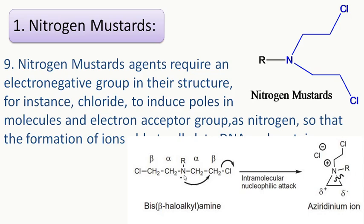You can see: chloro leaves as a leaving group, the adjacent carbon gains a positive charge, the lone pair of nitrogen attacks to form the aziridinium ion with a delta-positive charge. Adenine and guanine's N7 position nitrogen can attack this delta-positive carbon easily. These DNA bases are alkylated, the DNA is destroyed, and subsequently cell death occurs. So up till today, this much — we will see you in the next video. Thank you.